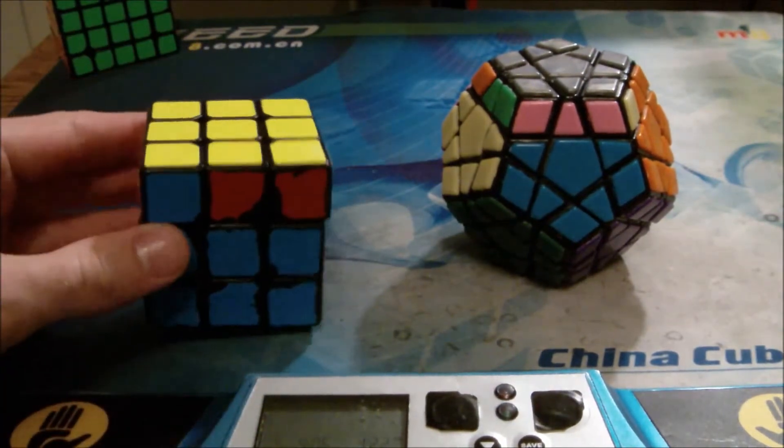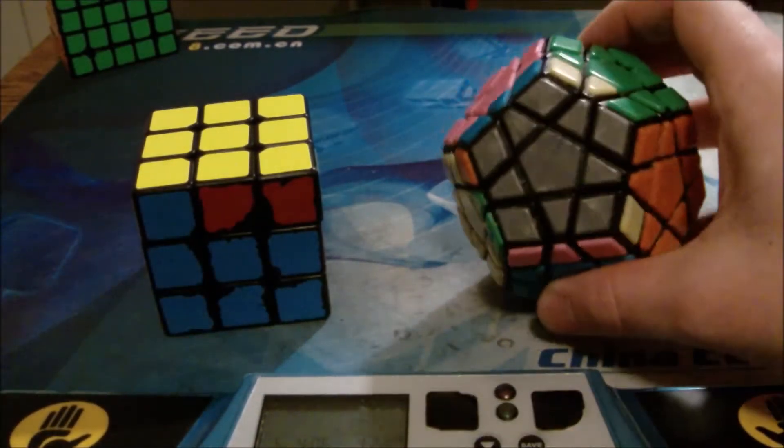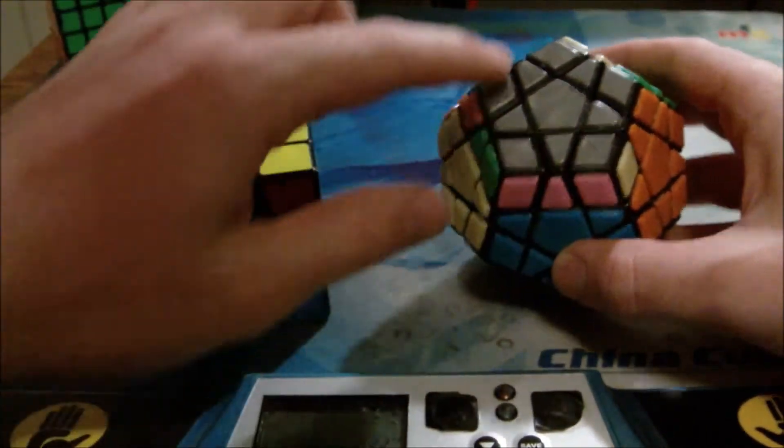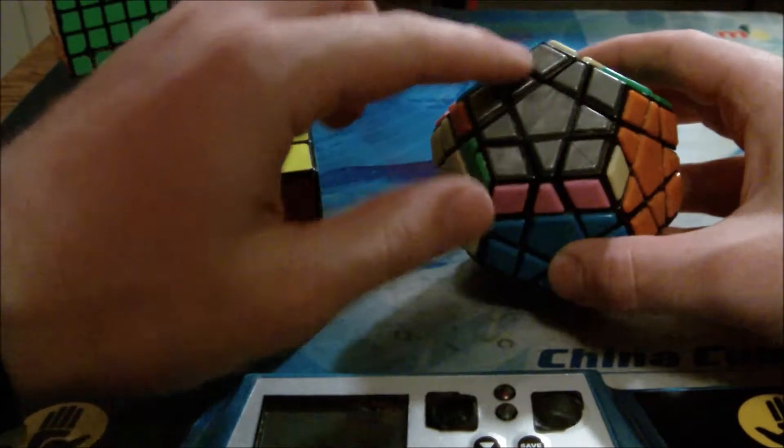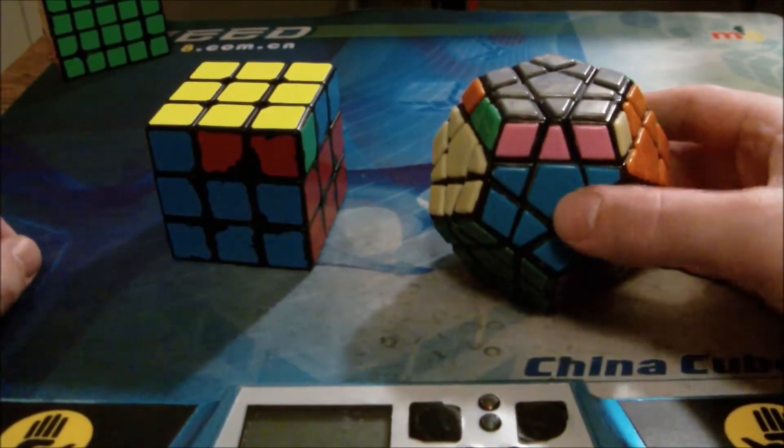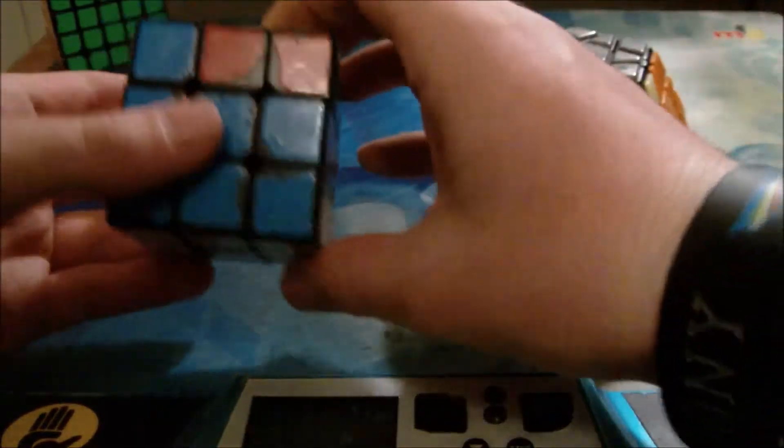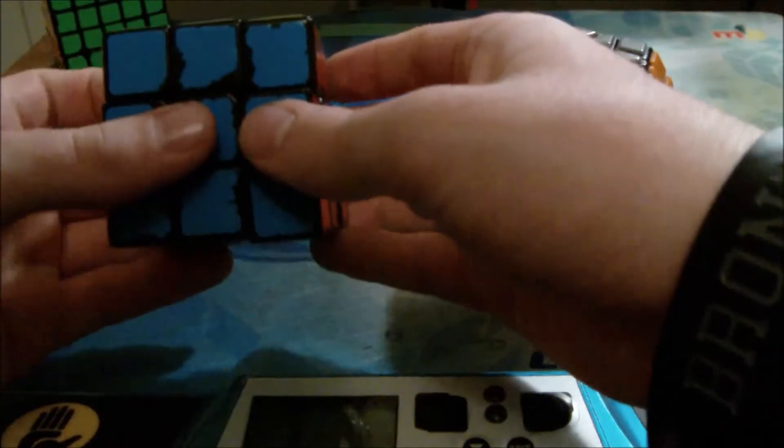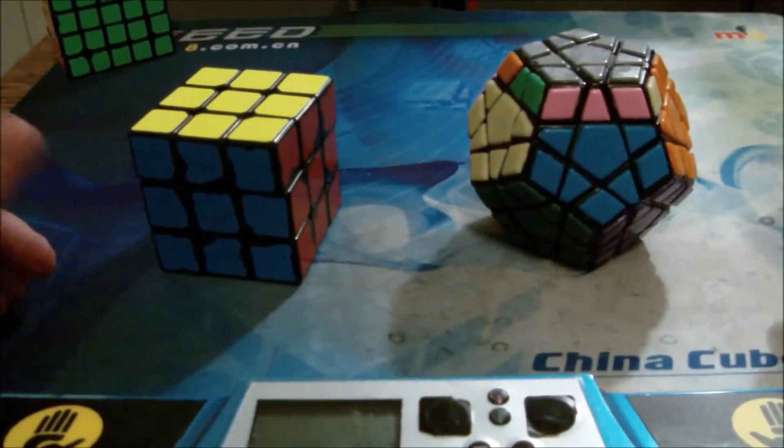And on Megaminx it looks like this. There are two block bar things, one in the front, one in the back. And it's the same algorithm, it's just the RUF one, and that solves that on 3x3.